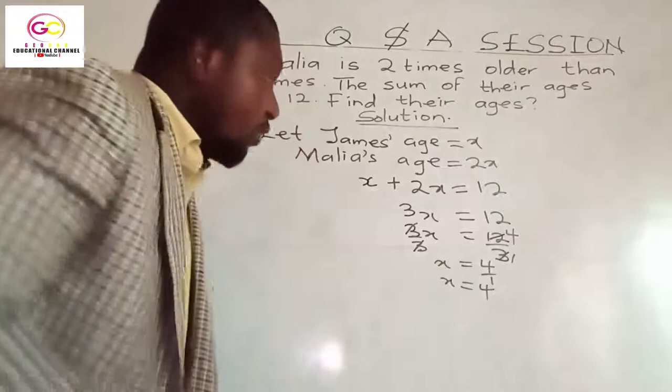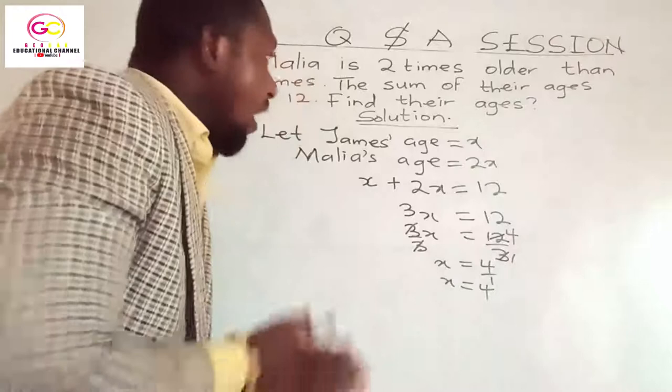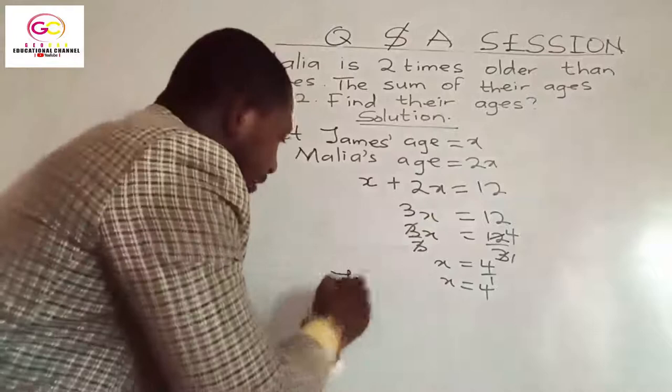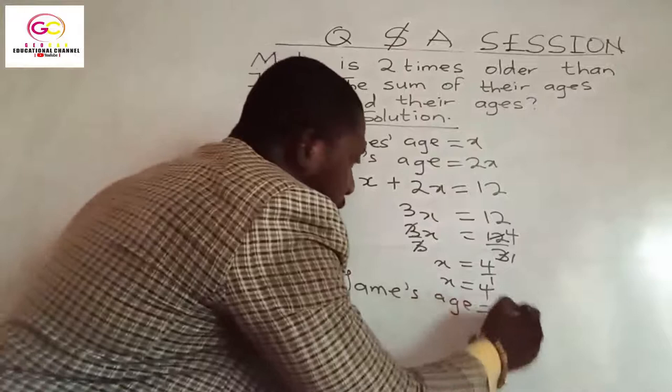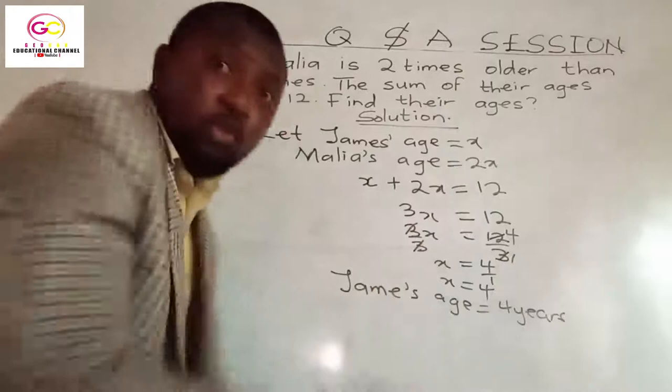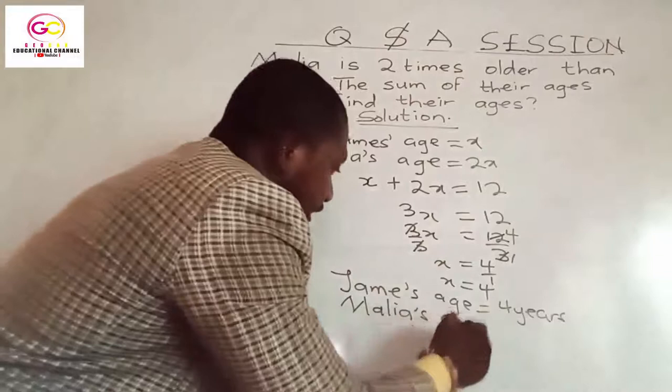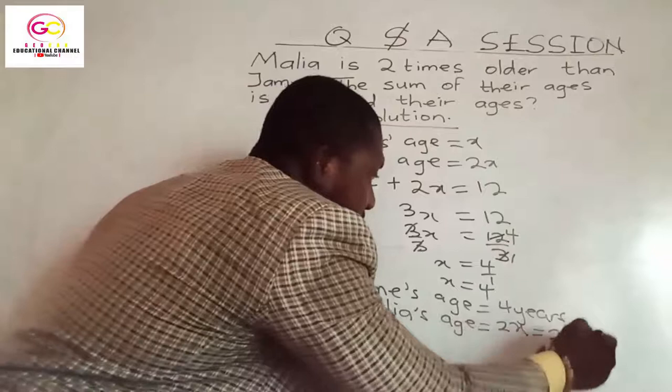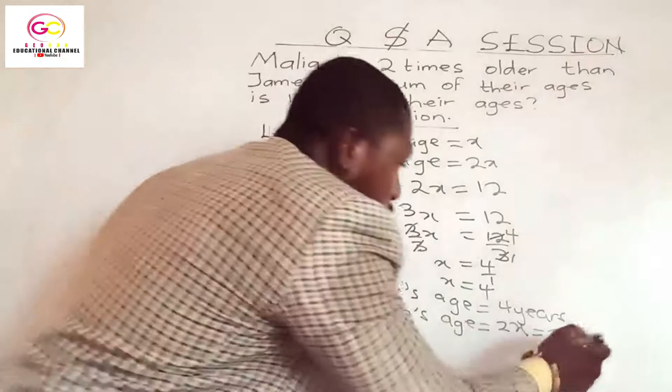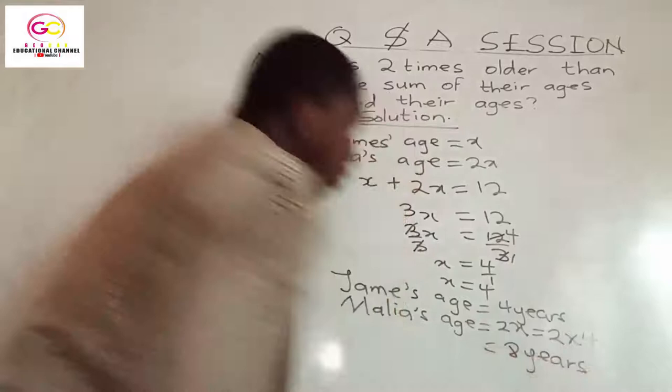So now we are able to find the value of X, which is 4. So we've found the age of James, which is 4. James' age is equal to 4 years. Now we said that Malia's age was 2X. So Malia's age would be equal to 2X, which is equal to 2 times 4, because X is 4. So 2 times 4 gives us 8 — so 8 years.